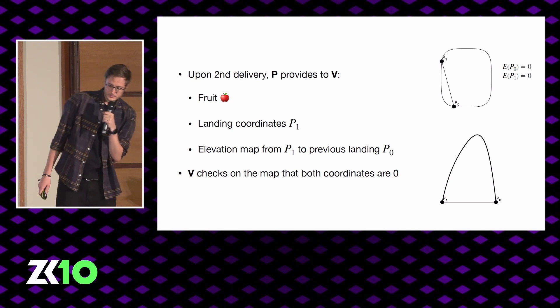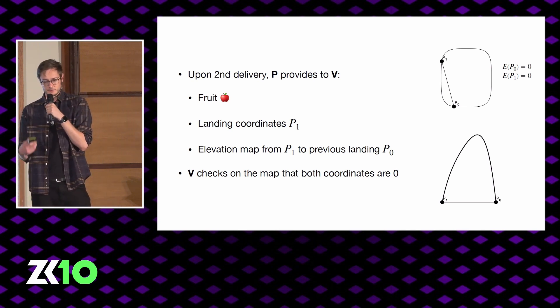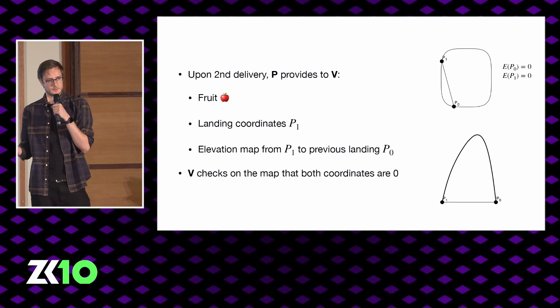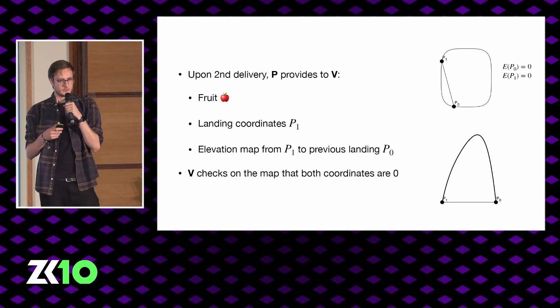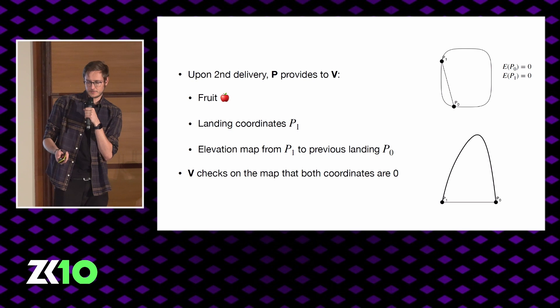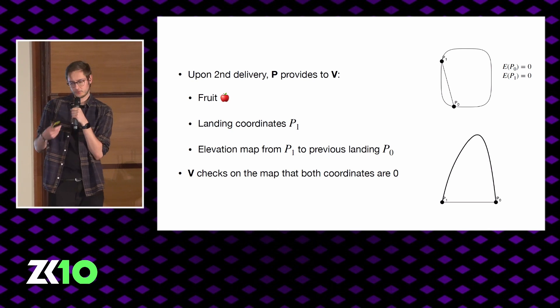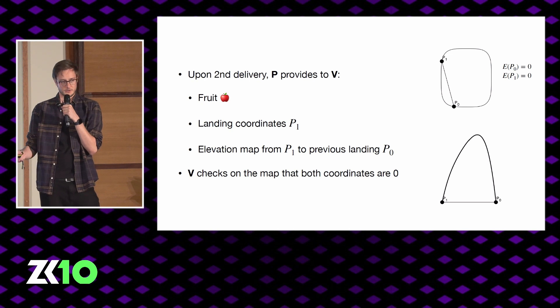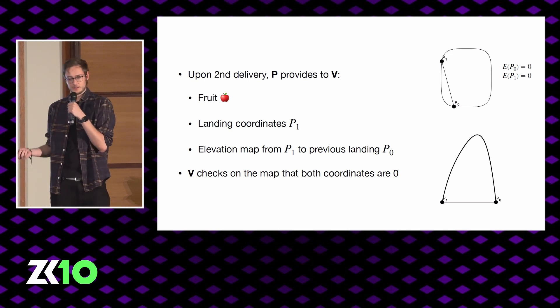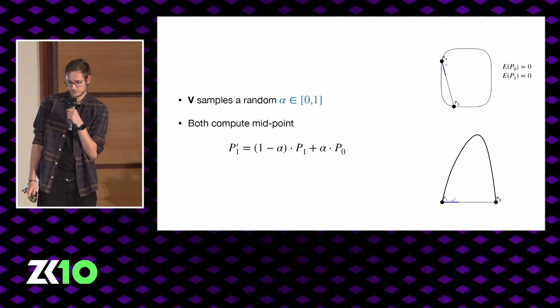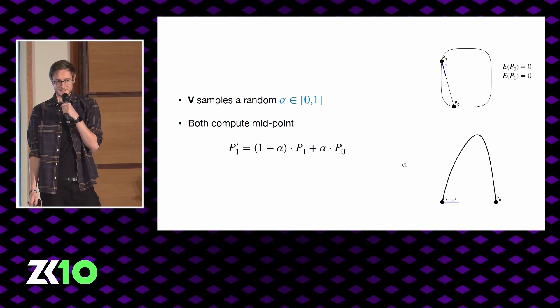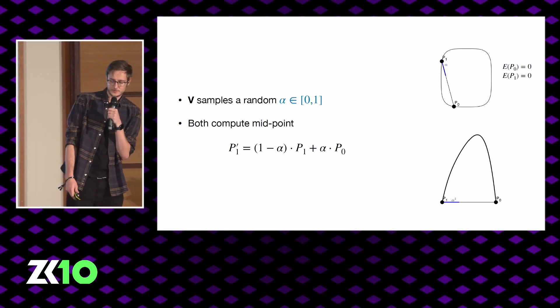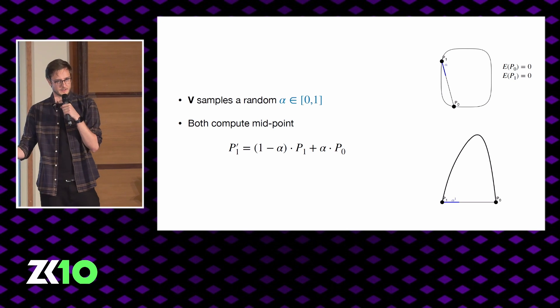And this is a really nice situation to be in because what we've just done is we've forced the prover to actually convey to the verifier that he visited the island. We've forced the prover to be right about the elevation at every single point between P1 and P0, and not just the elevations at P0 and P1. This is a nice situation to be in cryptography because we've just forced the prover to be right in several places.